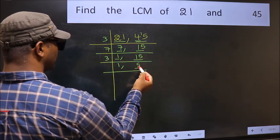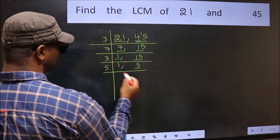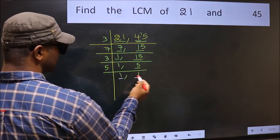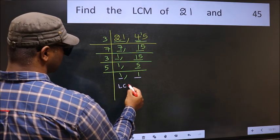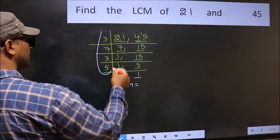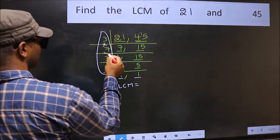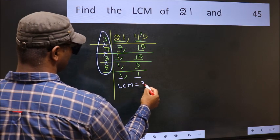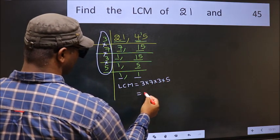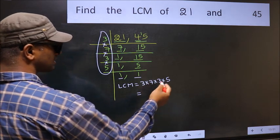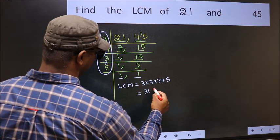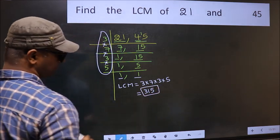15 is 3 fives, that is 15. Now here we have 5. 5 is a prime number, so 5 ones is 5. We got 1 in both places, so our LCM is the product of these numbers — that is 3 into 7 into 3 into 5. When we multiply these numbers, we get 315. So 315 is our LCM.